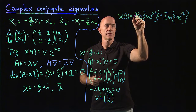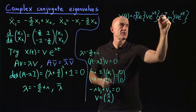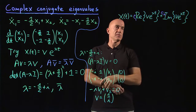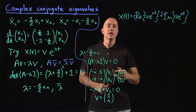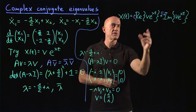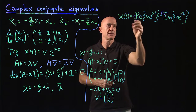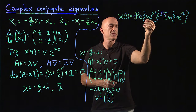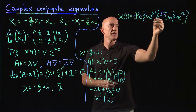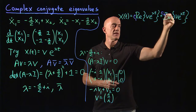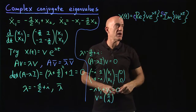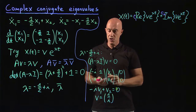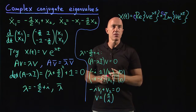The general solution is x(t) = c1 times the real part of v·e^(λt) plus c2 times the imaginary part of v·e^(λt), where c1 and c2 are arbitrary constants.